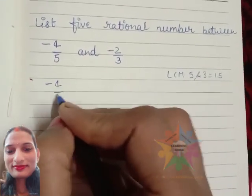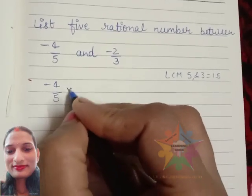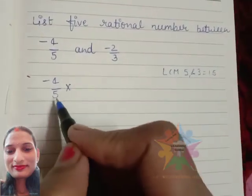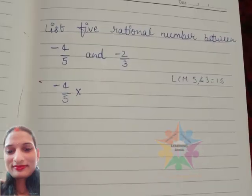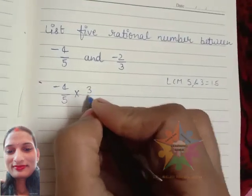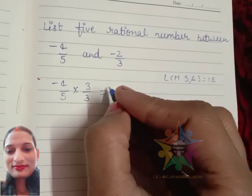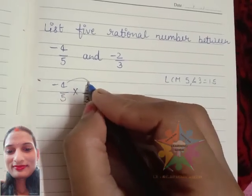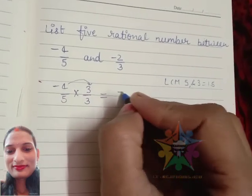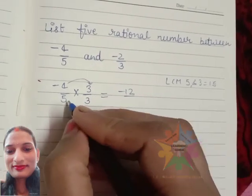For the first rational number, if I write -4/5 multiply by 3/3, multiplying numerator and denominator both, we get -12/15.